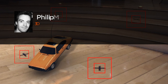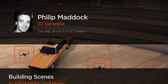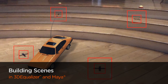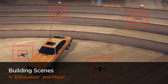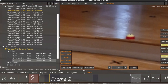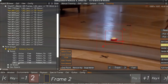Hi everyone, my name is Philip Maddock. I am a 3D generalist at The Mill London, and for most of my career I've worked mainly in the film industry, both in London and in Mumbai, India. However, I mainly work now on TV commercials and training other artists.